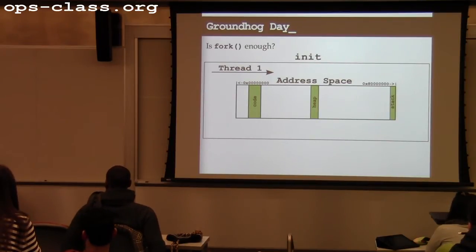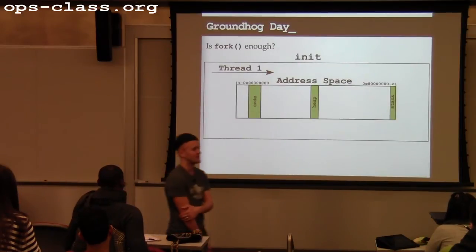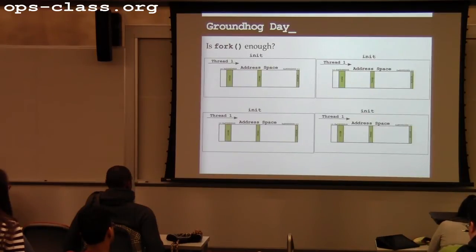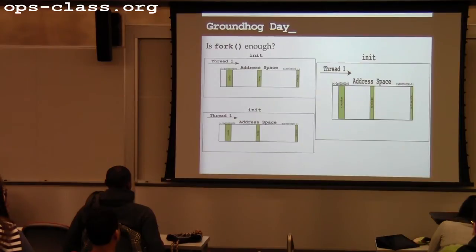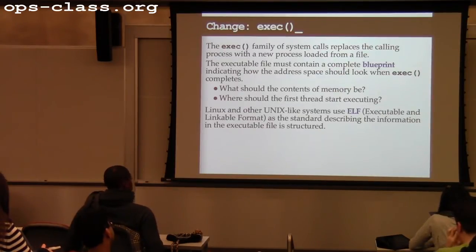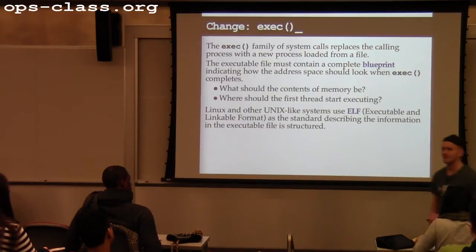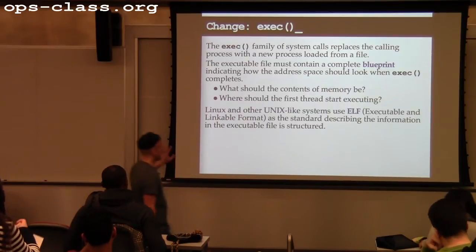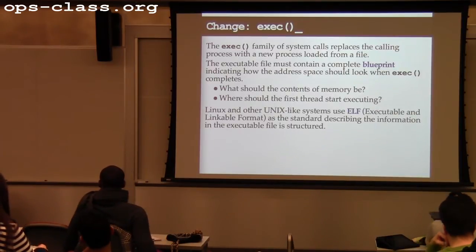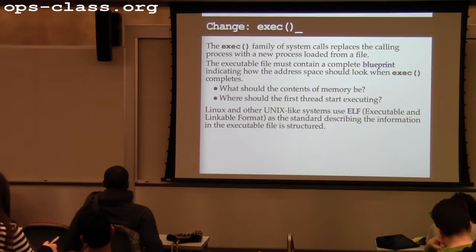If all we had was fork, the system would only ever consist of copies of init — that's all that would ever run. So we need to allow processes to change, and the mechanism for this on Unix-like systems is a family of system calls: execv, execvpe, execvec, and others. They all do very similar things — they allow a process to request that it be transformed into something else. This family of system calls replaces the calling process with a blueprint of a new process loaded from a file.